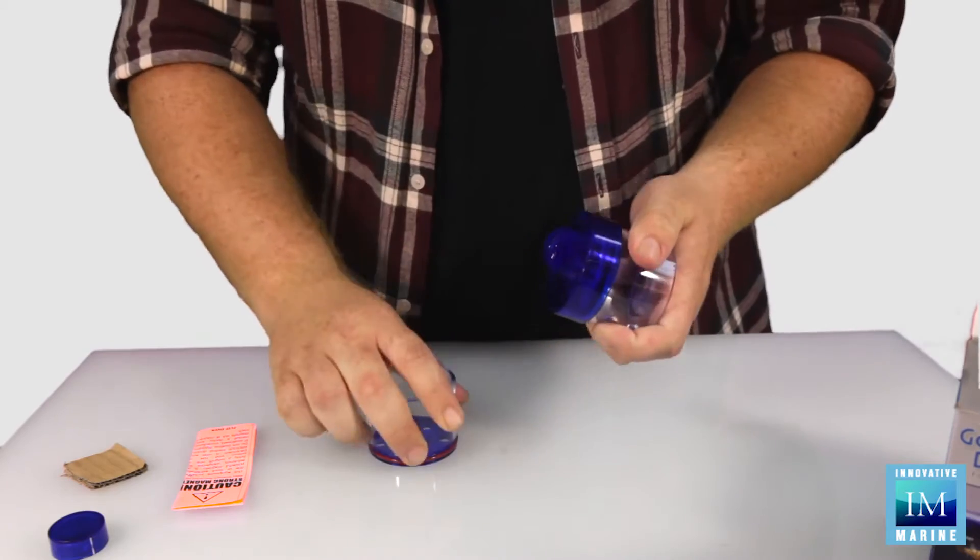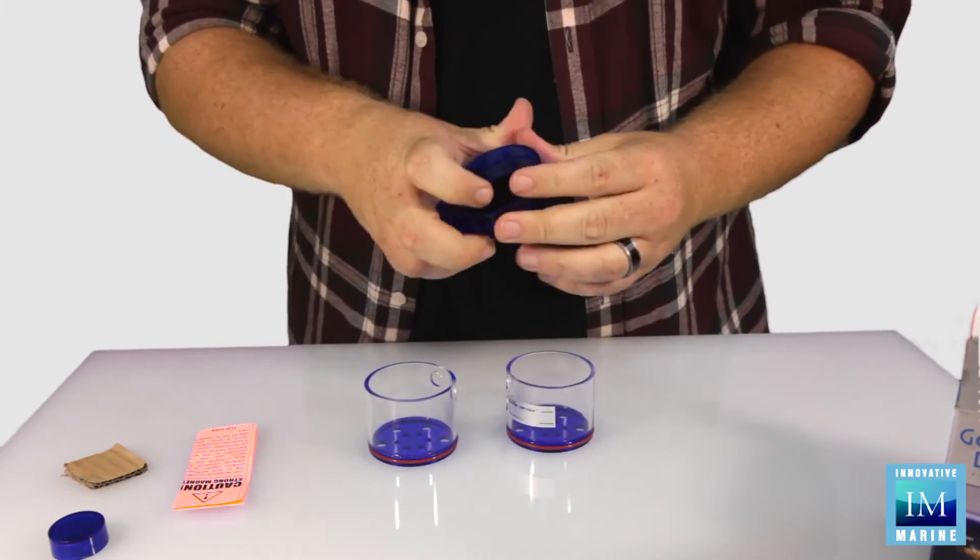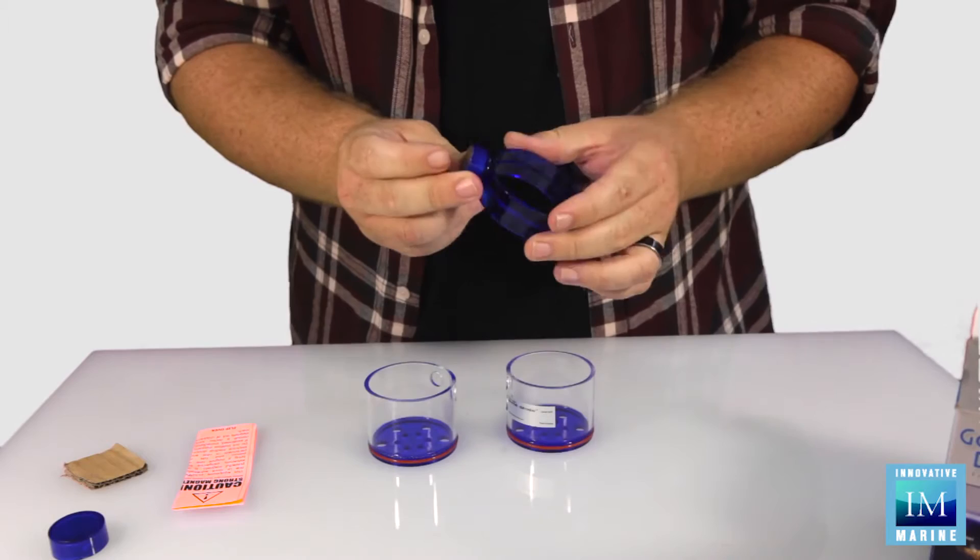The other awesome thing about the gourmet defroster is that when you take these two cups off, you can use it as a feeding ring for your aquarium. To help you better understand how this works, we've put together some examples for you to see it in action.